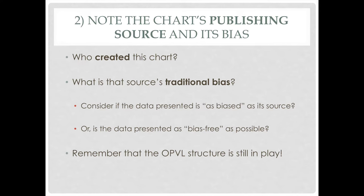Number two: we're going to note the chart's publishing source and try to figure out its bias. Who created this chart? Is that a person, a group, a website, a special interest group? Once we've identified who made it, we have to ask: what is that source's traditional bias? As we get more practice looking at sources, we can typically say, 'if it's coming from this source, it's going to be biased toward X, Y, or Z' or 'biased against X, Y, or Z.'